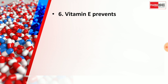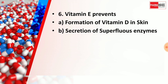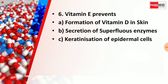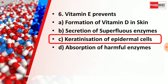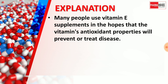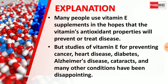Question number 6: Vitamin E prevents — Option A: formation of Vitamin D in skin, Option B: secretion of superfluous enzymes, Option C: keratinization of epidermal cells, Option D: absorption of harmful enzymes. The right answer is Option C, keratinization of epidermal cells. Many people use Vitamin E supplements for its antioxidant properties, though studies for preventing cancer, heart disease, diabetes, Alzheimer's disease, and cataracts have been disappointing.